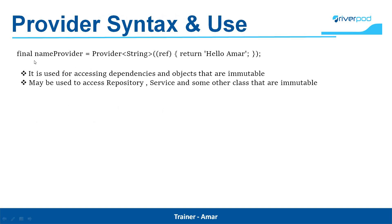How to declare a RiverPod Provider? The syntax is: final nameProvider equals Provider of String, ref, return 'Hello Amar'. Here, nameProvider is the global variable that will be used to read the state of the provider. Provider of String specifies what kind of provider we are using and the type of state it holds — in this case, String. It is a function that creates the state, and we get a ref parameter here, which can be used to read other providers.